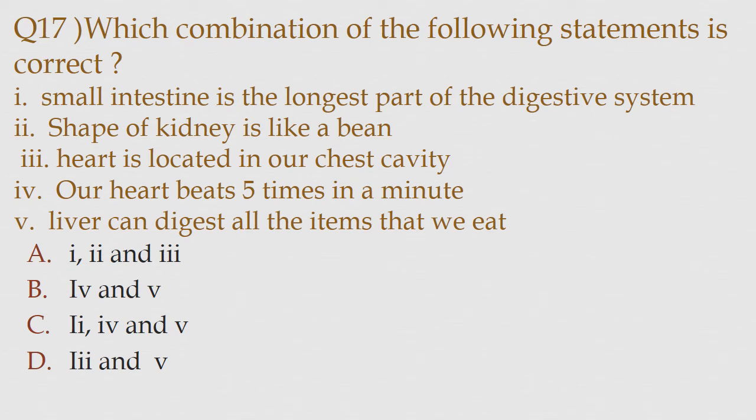Question number 17. Which combination of the following statements is correct? 1. Small intestine is the longest part of the digestive system. 2. Shape of the kidney is like a bean. 3. Heart is located in our chest cavity. 4. Our heart beats 5 times in a minute. 5. Liver can digest all the items that we eat.